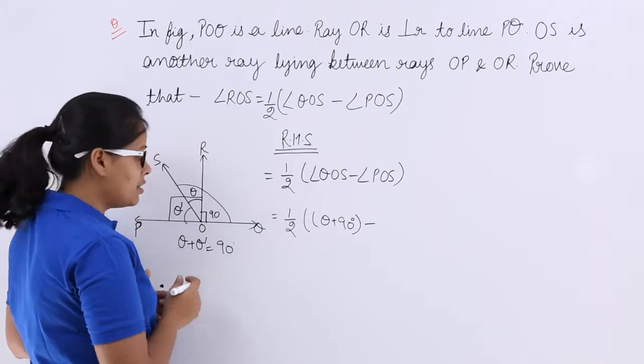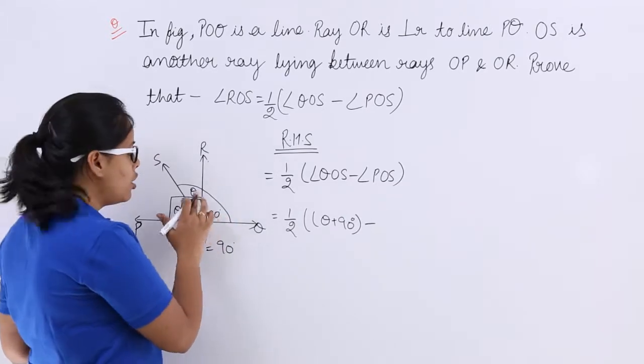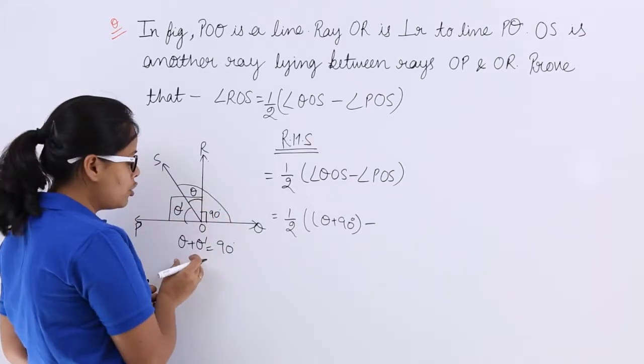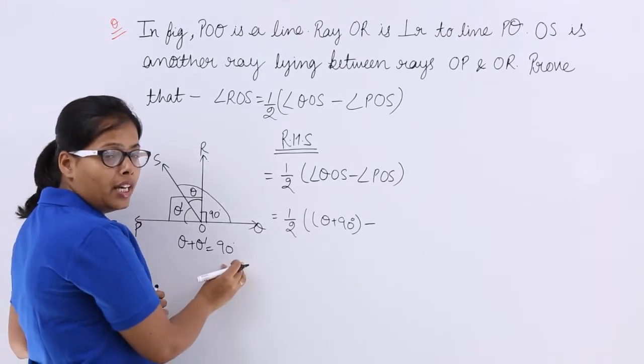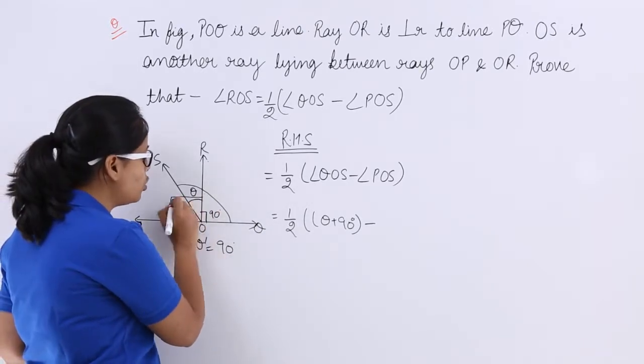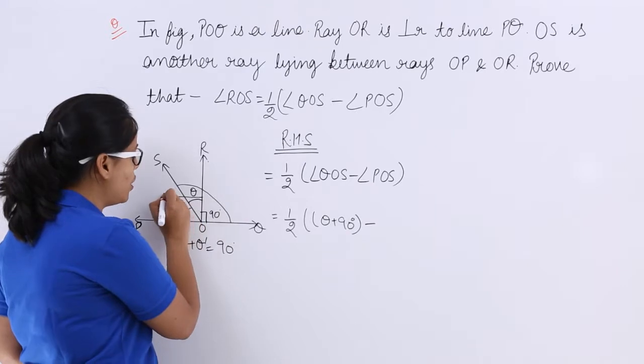So now see, theta plus theta dash should be equal to 90 degree. If this is 90 degree, so this angle will be 90 degree. Sum of these two angles will be 90 degree because these two are the angles which are constituting this 90 degree angle.